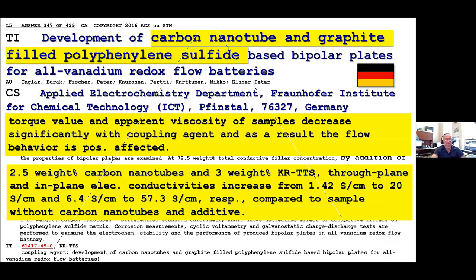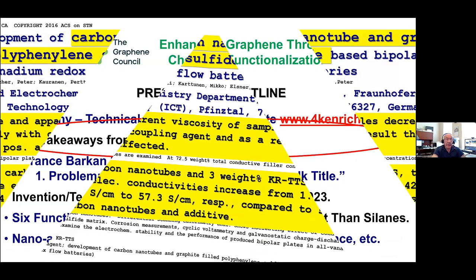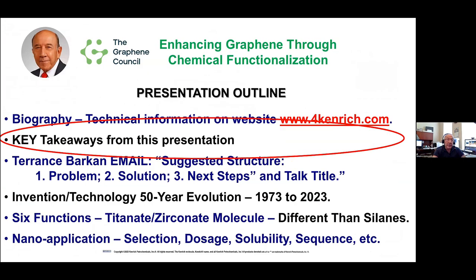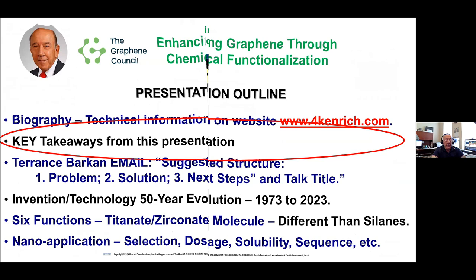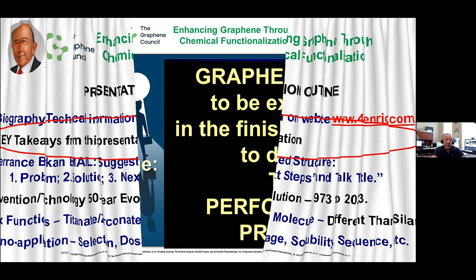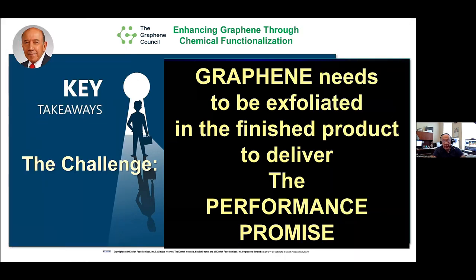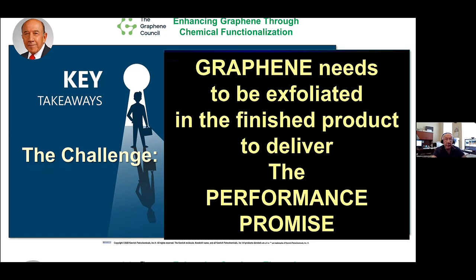Key takeaways I want you to get from this presentation. Number one is the challenge: graphene needs to be exfoliated in the finished product to deliver the performance promise. The biggest disappointment in graphene is that it always seems not to meet the goals — the reason is it's just not being exfoliated properly and the chemistry of the interface needs to be improved.